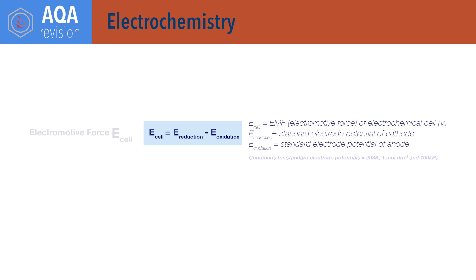For electrochemistry, E cell equals E reduction minus E oxidation, where E cell is the electromotive force or EMF of an electrochemical cell. E reduction is the standard electrode potential for the cathode of the cell, and E oxidation is the standard electrode potential for the anode of the cell.